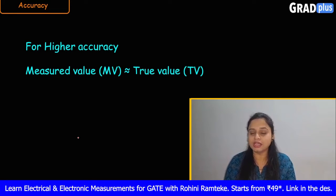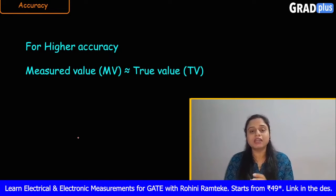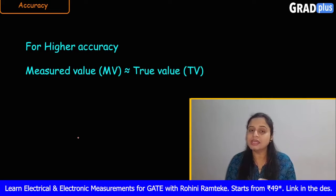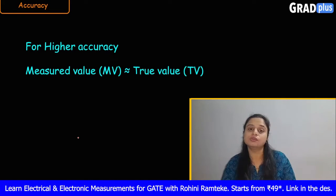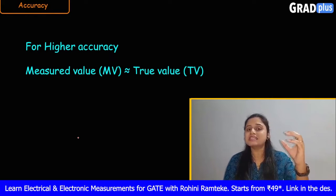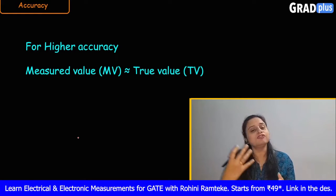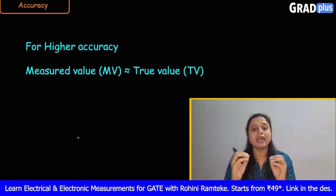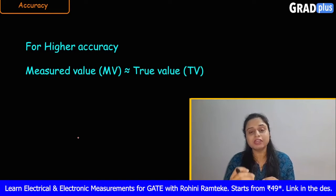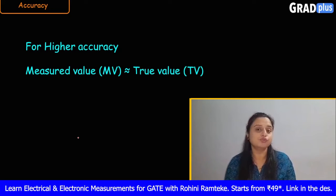To minimize error, the measured value should be approximately or nearly equal to the true value. When both values are nearly equal, errors are minimized and the accuracy of the meter automatically increases. So for a meter to be more accurate, the measured value should be nearly equal to the true value.